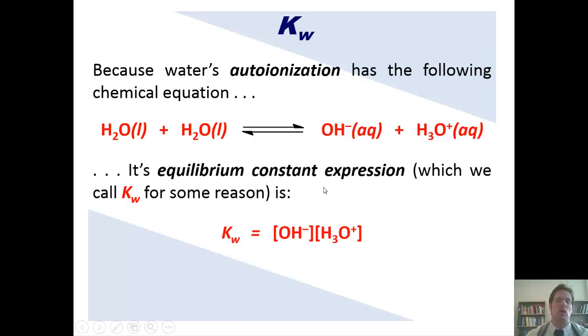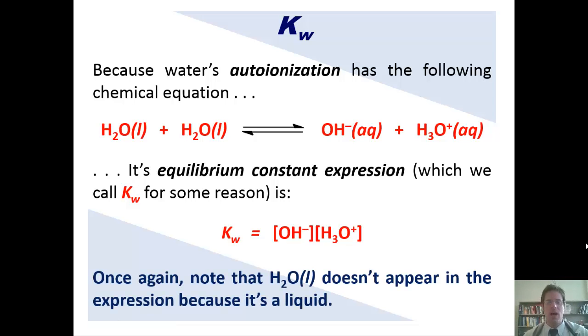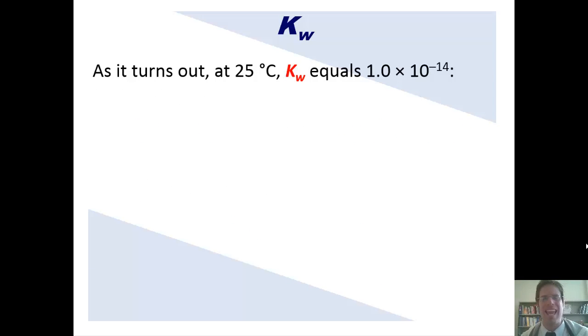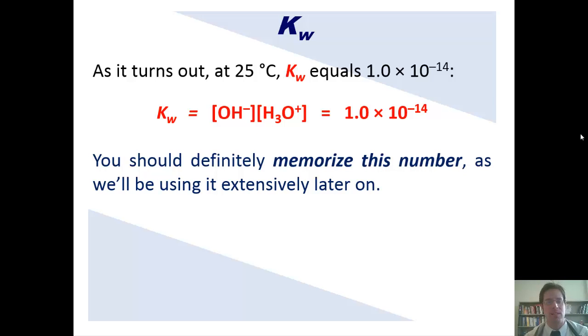You'll notice, as we described earlier when I was discussing Ka values, that water, H2O liquid, does not appear in this expression anywhere because it's a liquid. Once again, liquids and solids are omitted from equilibrium constant expressions. Now, as it turns out, at 25 degrees Celsius anyway, KW, this equilibrium constant for water, equals 1 times 10 to the negative 14th, which means that the concentrations of hydroxide and hydronium multiplied together equal that number. Now, you, my students, should definitely memorize this number, as we'll be using it extensively later on.